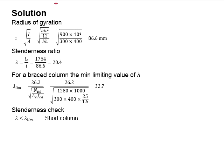Next, you determine the radius of gyration. Substitute the relevant value. You will obtain the radius of gyration 86.6 mm. From there, you will be able to obtain the slenderness ratio which is equal to 20.4.